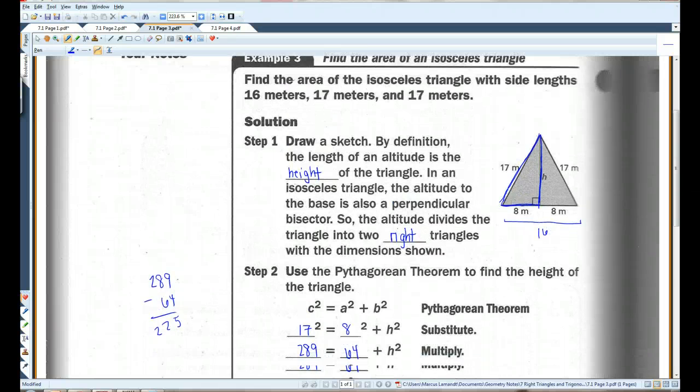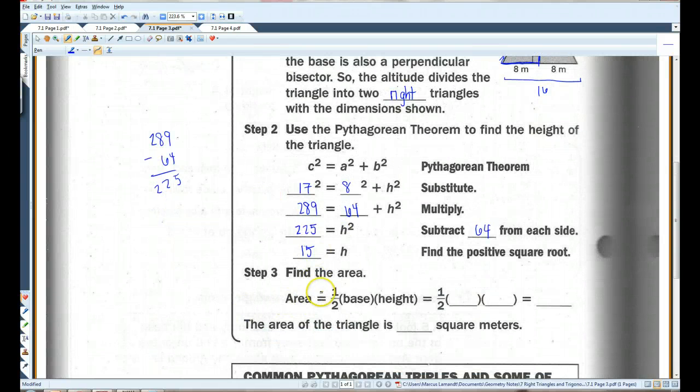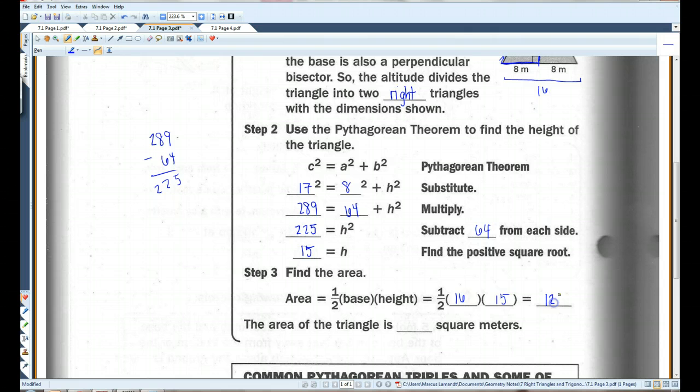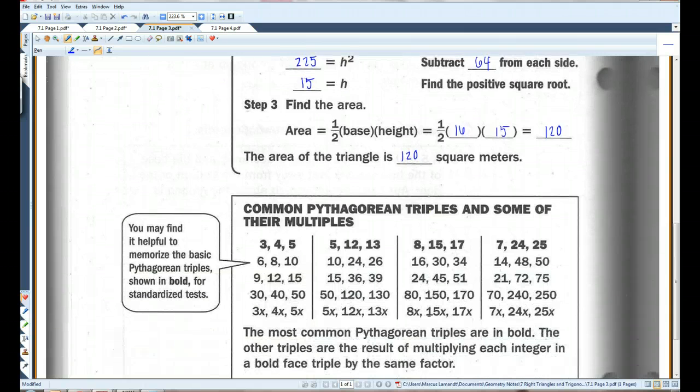Now, the reason we're trying to find the height in the first place is because in order to find the area, hopefully you remember the area of a triangle is 1 half base times height. We already have the base. The base is 16. And now we know that the height is 15. So, 16 times 15. I'm just going to use the calculator. 240 divided by 2. 120. I divide it by 2 because I'm taking half of whatever this is. So, we've got 120 square meters. That's the area.